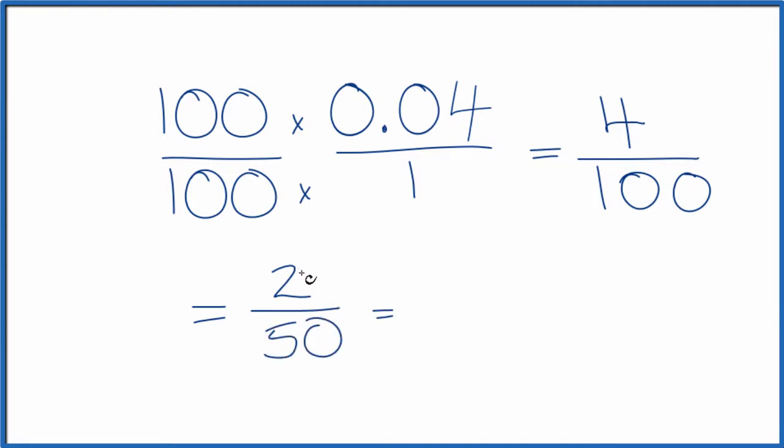And we can reduce that further. 2 divided by 2 is 1. And 50 divided by 2, that's 25. So the decimal 0.04 as a fraction that's been simplified is 1 25th.